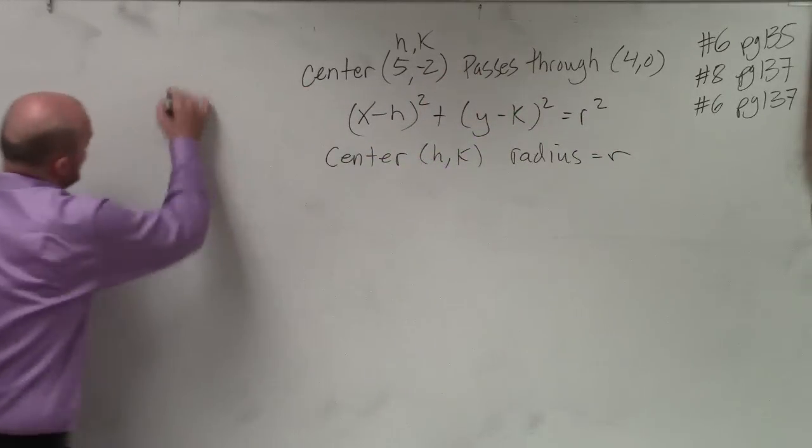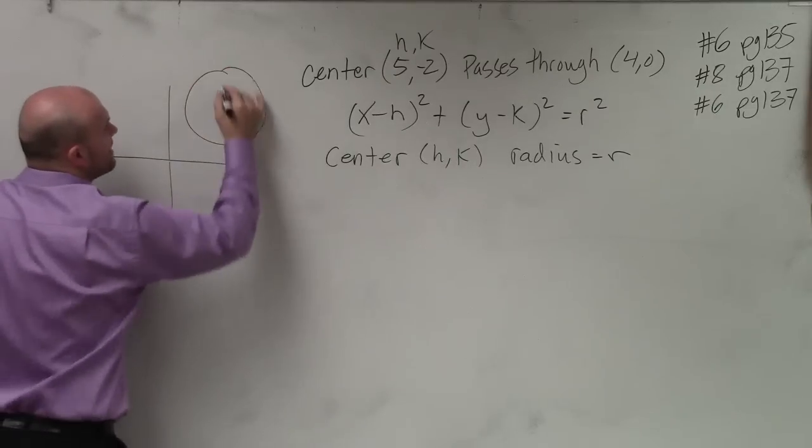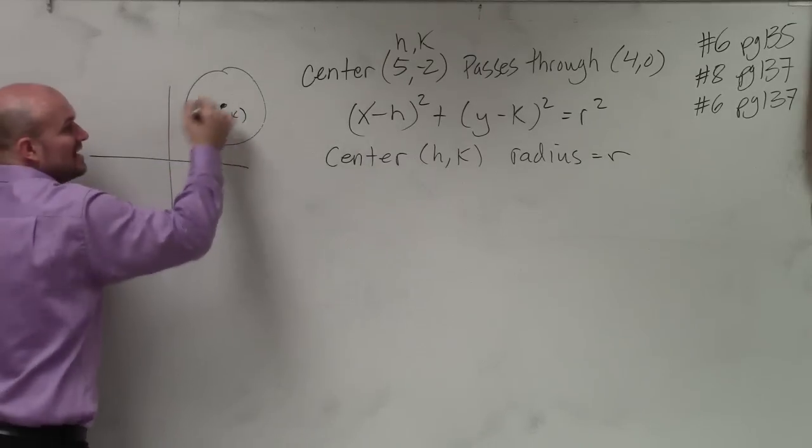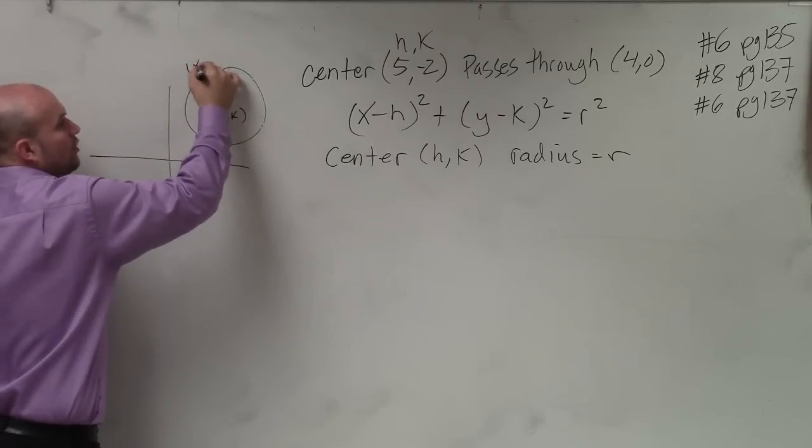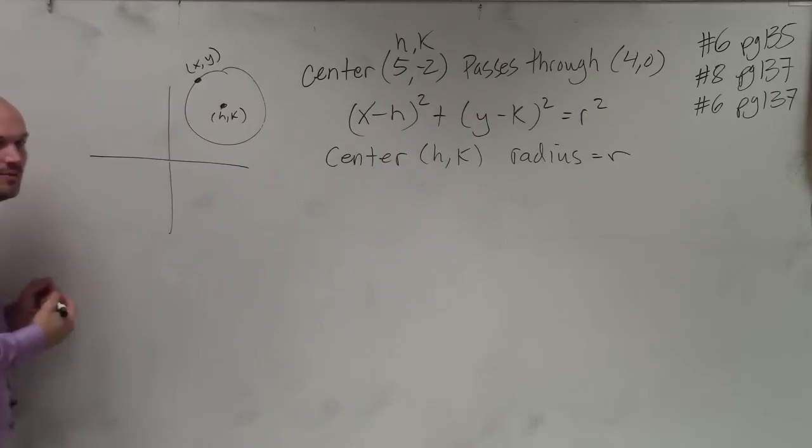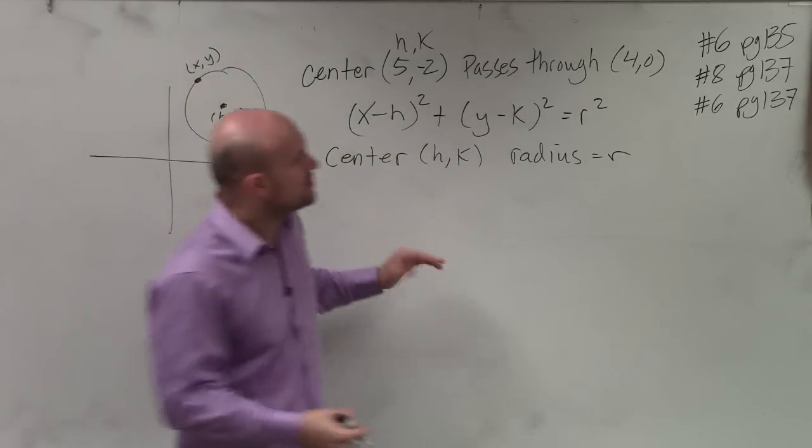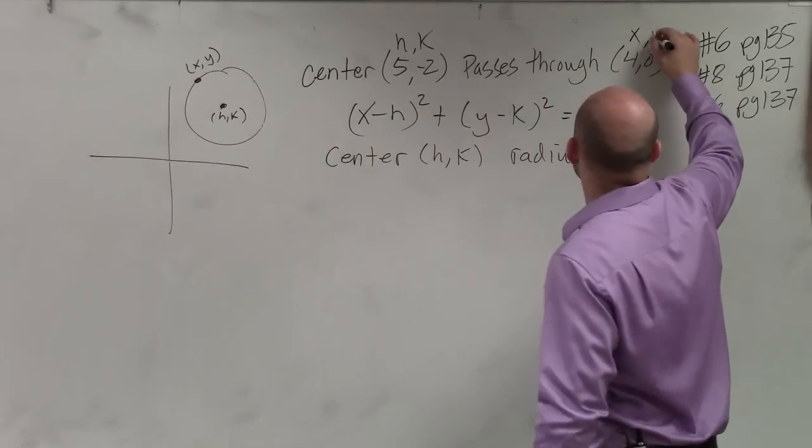Remember, if you guys look at a circle graphed, that's the center, (h, k). Any point that I say is on the circle is a coordinate point, which could represent (x, y). The equation of the circle represents infinitely many points on the circle. So therefore, I can say that's (x, y).